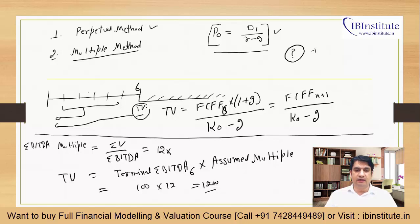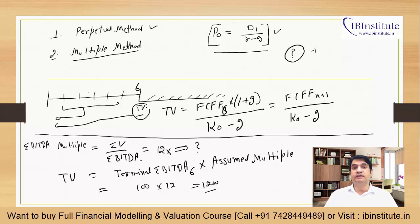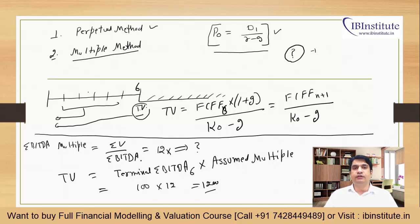The challenge here is: where does the 12X assumption come from? It can come from the industry average, or from comparable companies that were recently acquired — at what average multiple were they acquired? There are also certain websites that provide this data. This video series is currently covering the theory part of DCF; when the practical portion starts, we will go to each source for every assumption and bring it into the model.